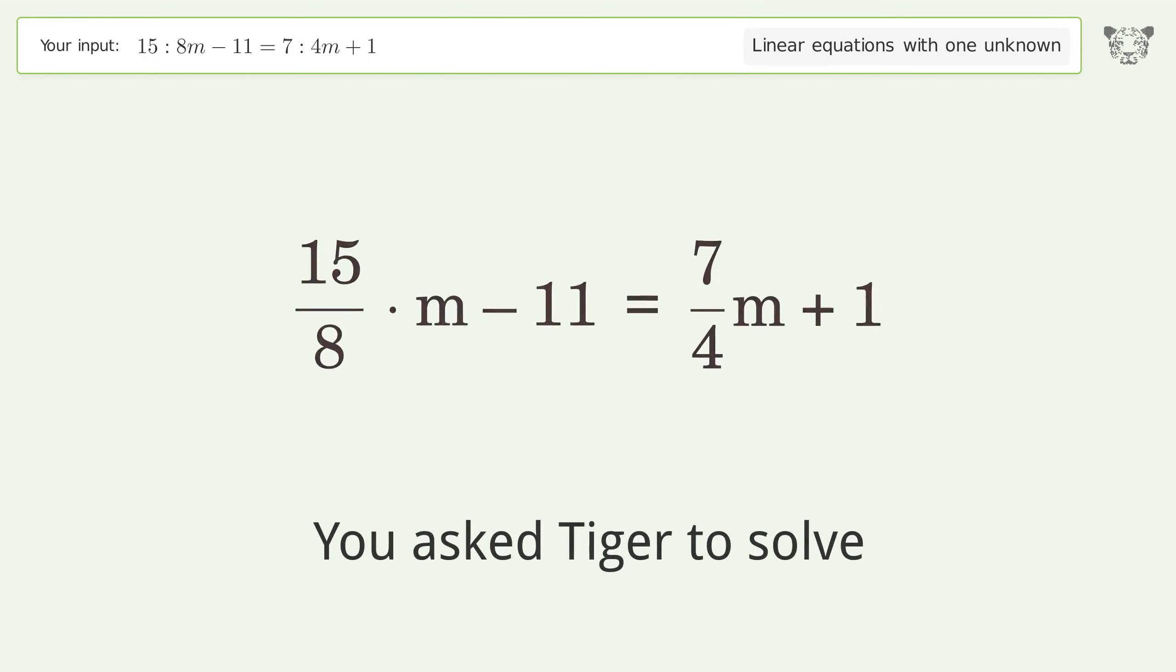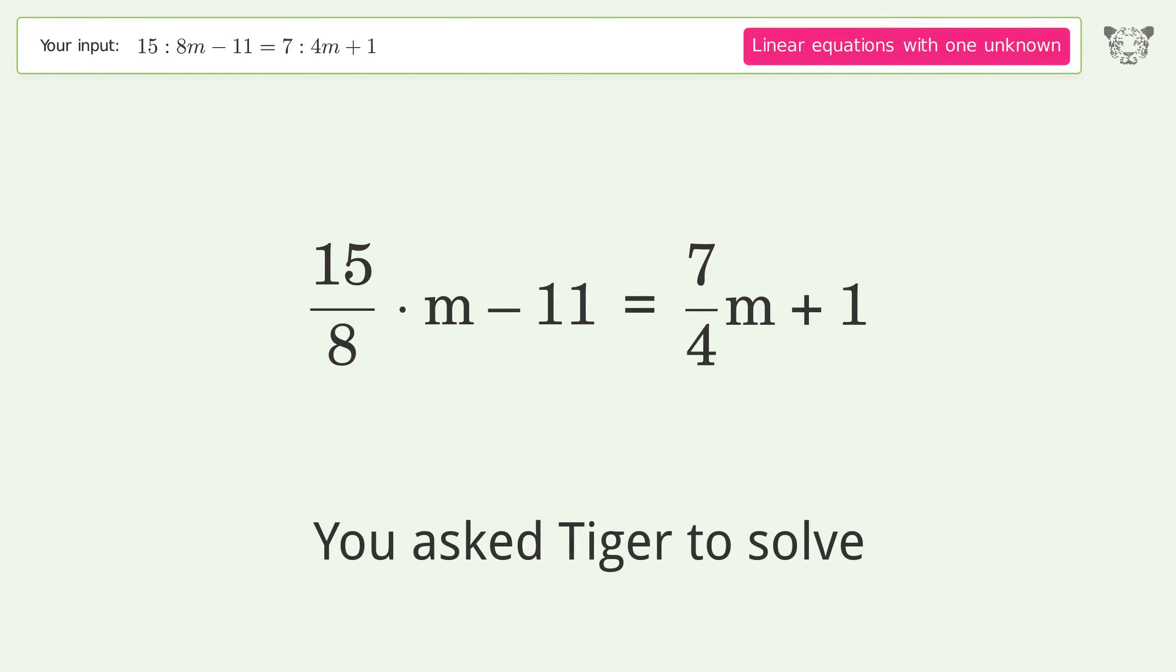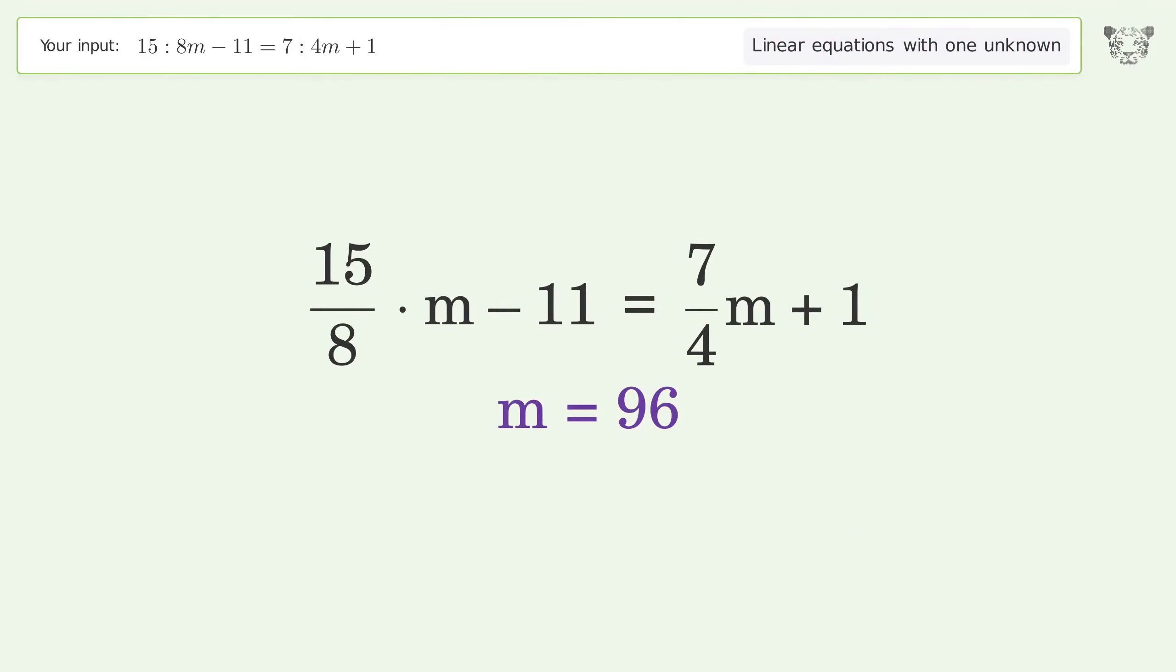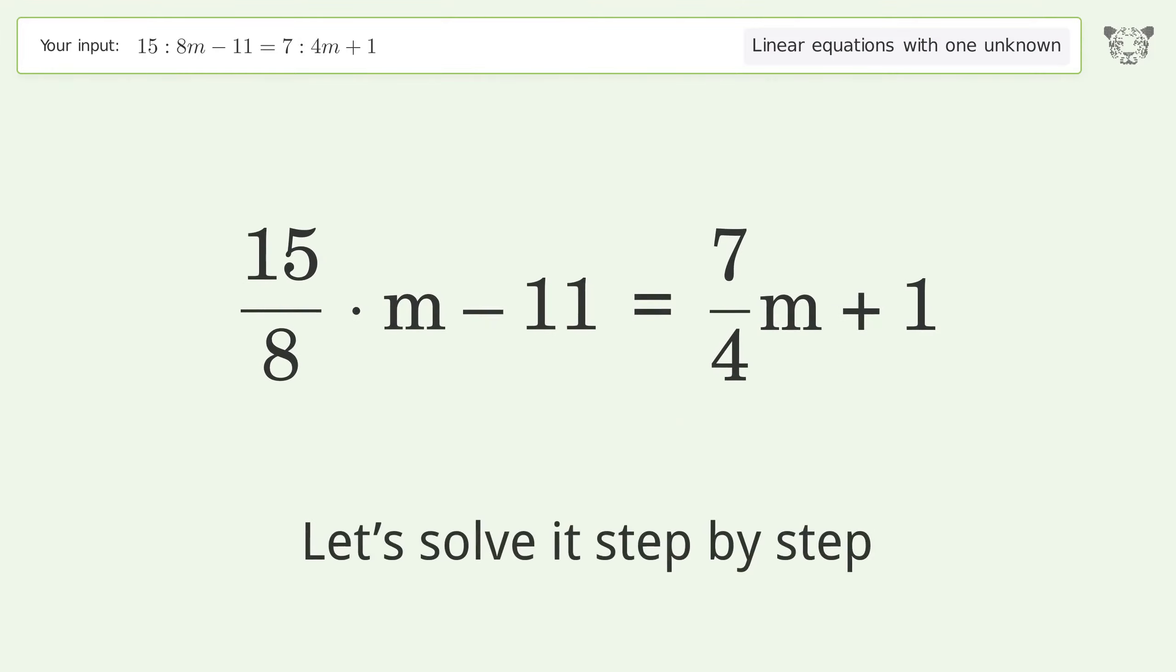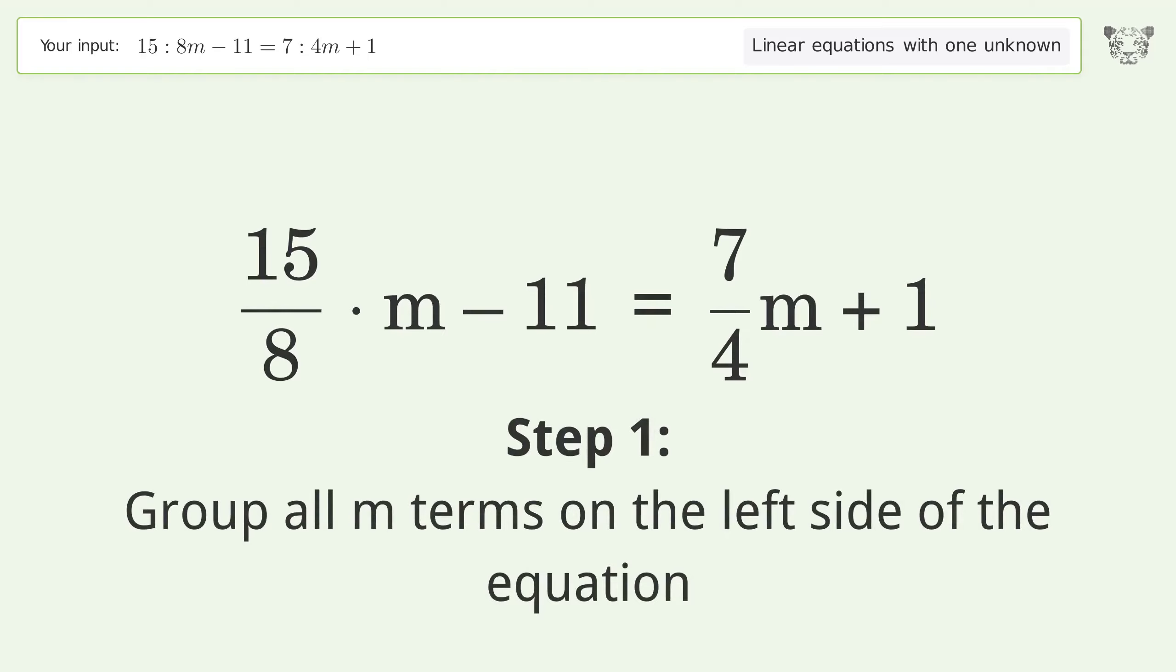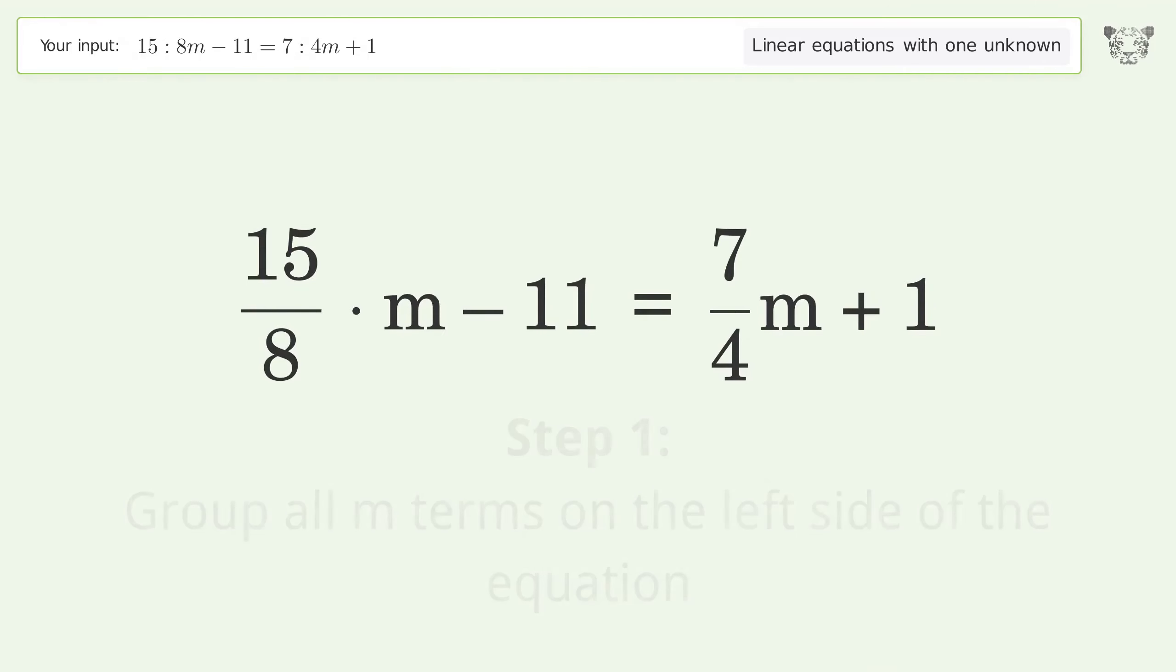You asked Tiger to solve this equation dealing with linear equations with one unknown. The final result is m equals 96. Let's solve it step by step. Group all m terms on the left side of the equation. Subtract 7 over 4 m from both sides.